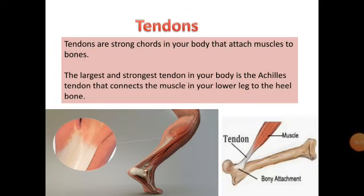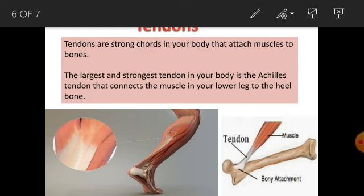Now, what are tendons? Tendons are strong cords in your body that attach muscles to bones. Do you know which tendon in the human body is the strongest and the largest? The Achilles tendon is the strongest and the largest tendon. It connects the muscle in the lower leg to the heel bone.